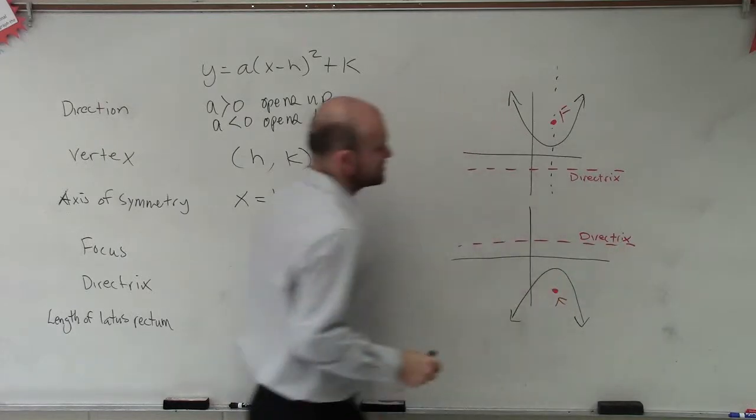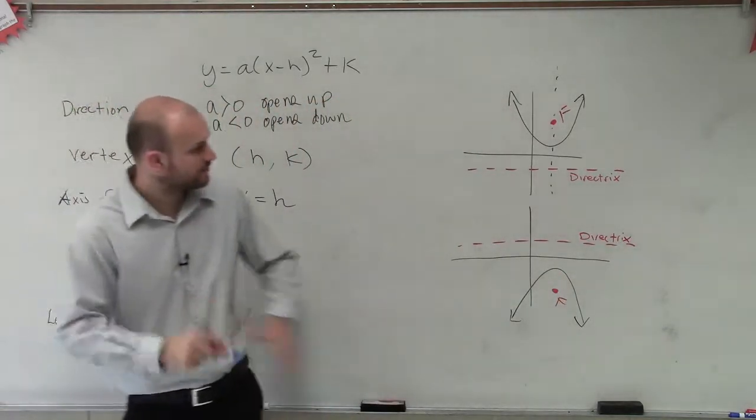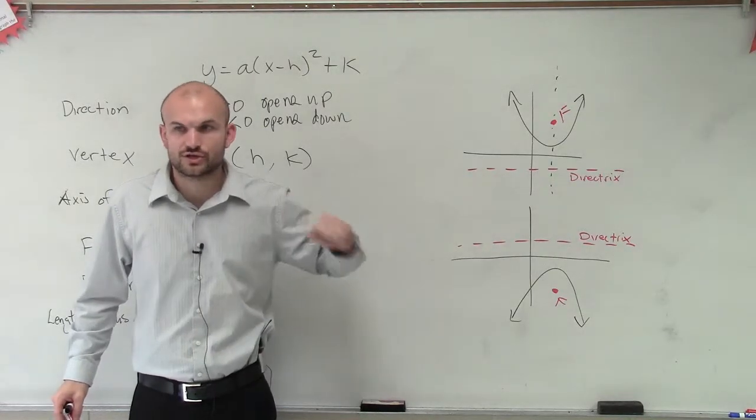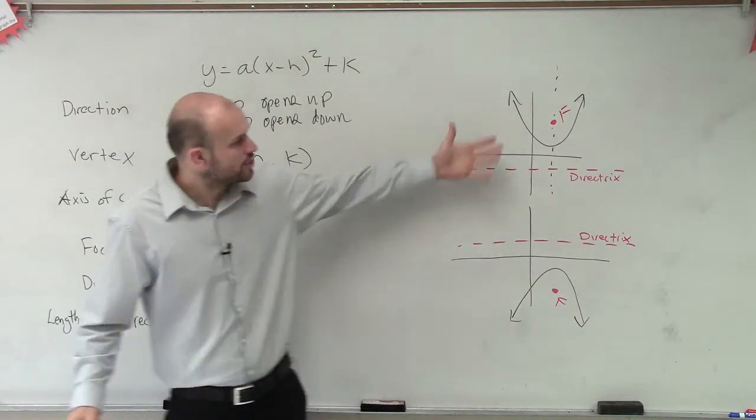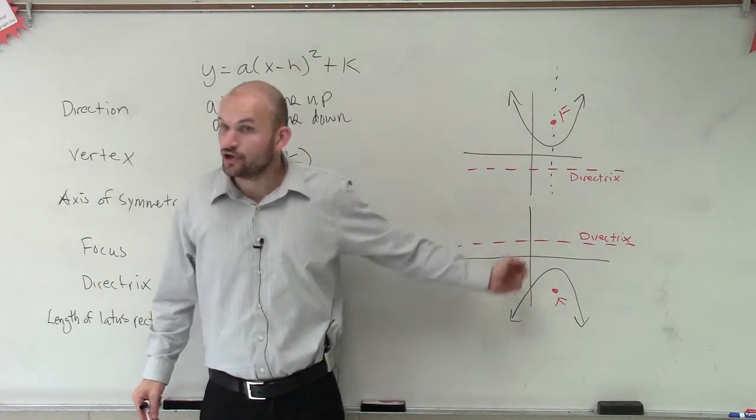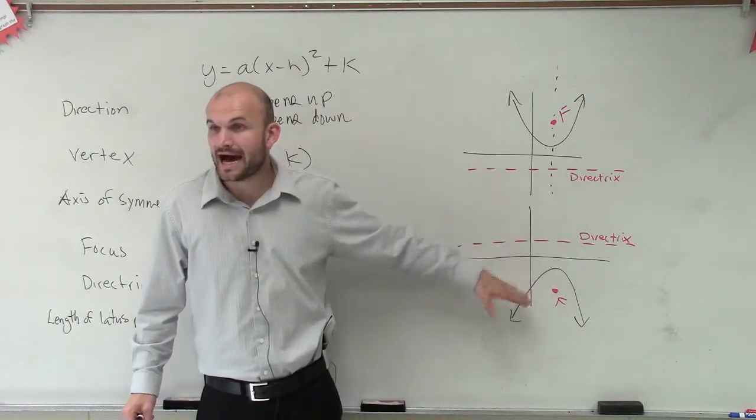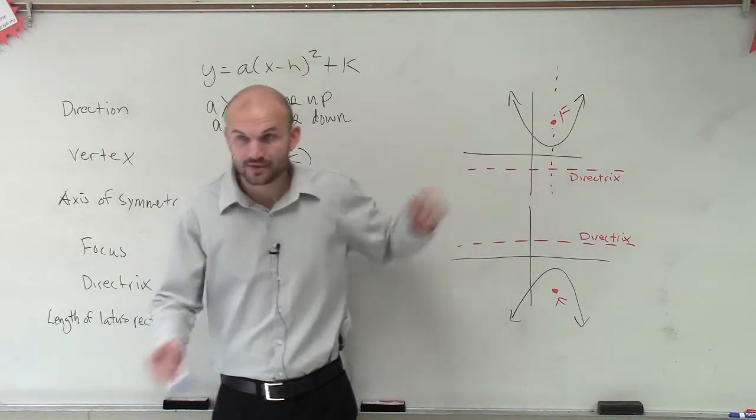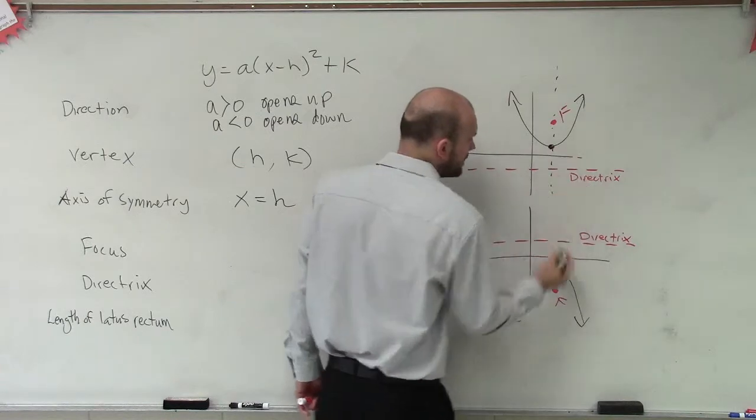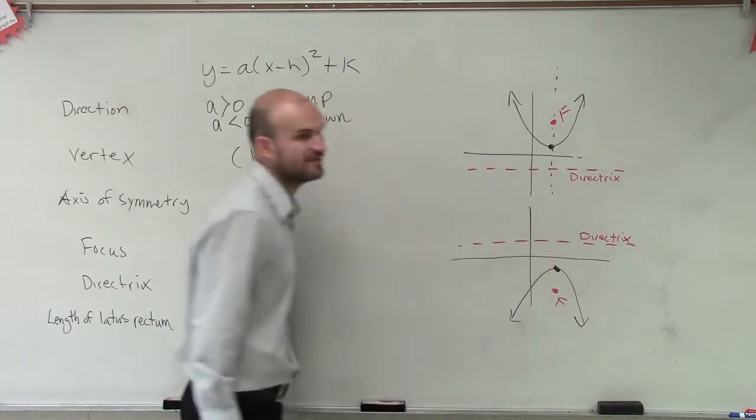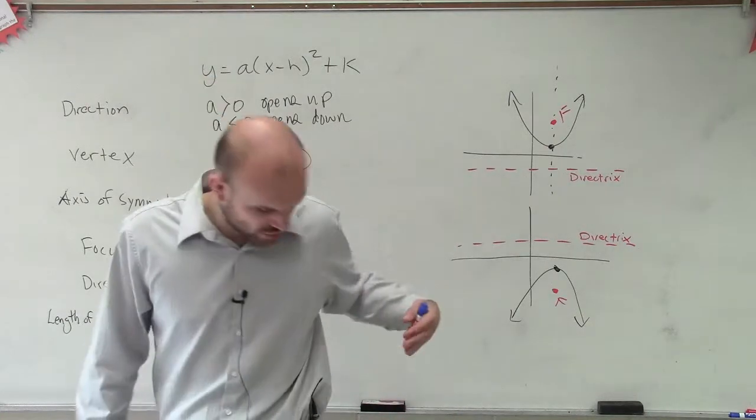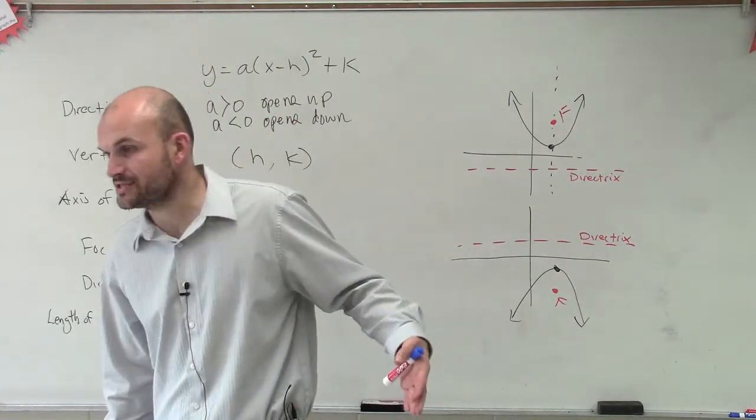All I want you guys to understand right now is, for each one of these, where the focus and the directrix are, are in certain characteristics of the parabola. Notice how the focus is inside my parabola. Does everybody see that? Notice how the directrix is on the opposite side. So one thing we can say, ladies and gentlemen, remember I said all points of a parabola are equal distance from the focus to the directrix. Does that make sense?